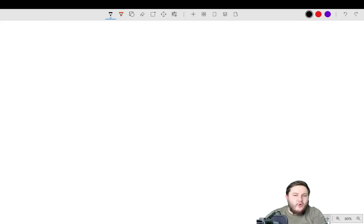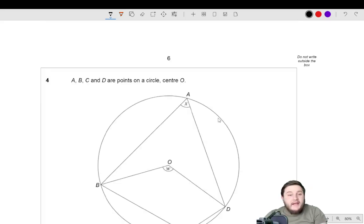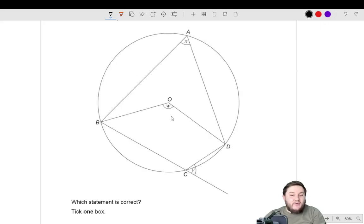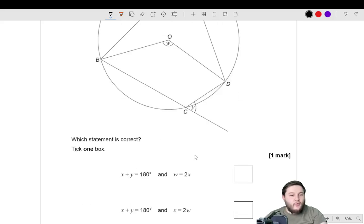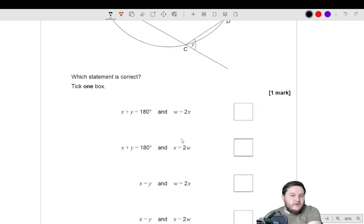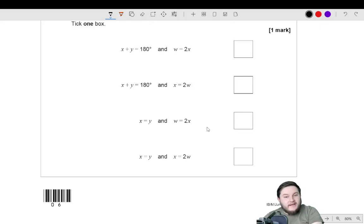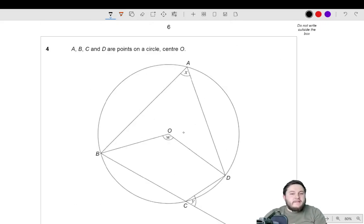Okay, I think we probably have time for one more. So A, B, C, D are points on a circle with centre O. And we've got this angle labelled x, this one w, this one y. Which statement is correct? Tick one box. x + y is equal to 180 and w is equal to 2x. x + y is equal to 180 and x is equal to 2w. x equals y and w is equal to 2x. x equals y and x equal to 2w. Well, first thing to note is that there's a couple of key rules happening here. First of all, the angle at the centre is twice the angle at the circumference. That's obviously the first key idea here.